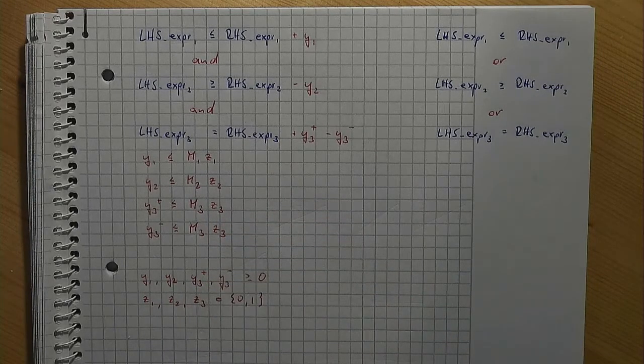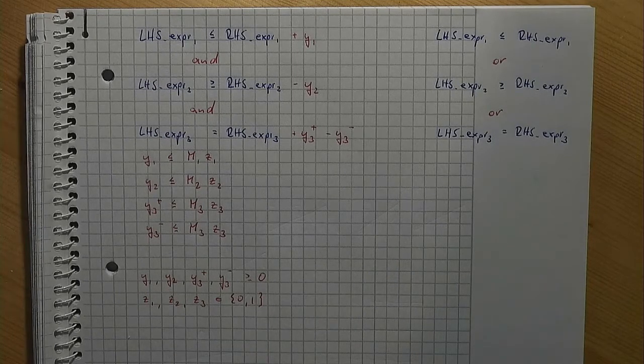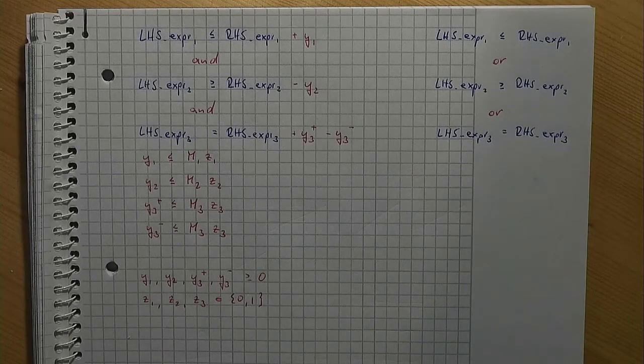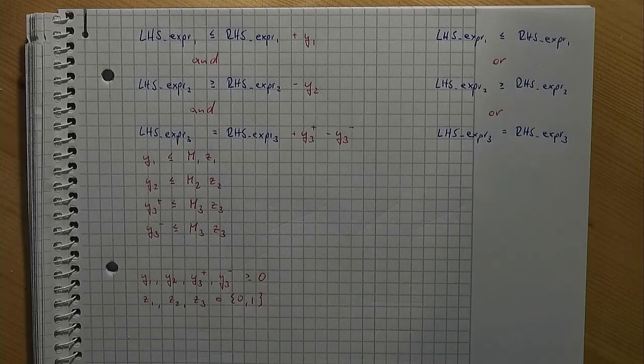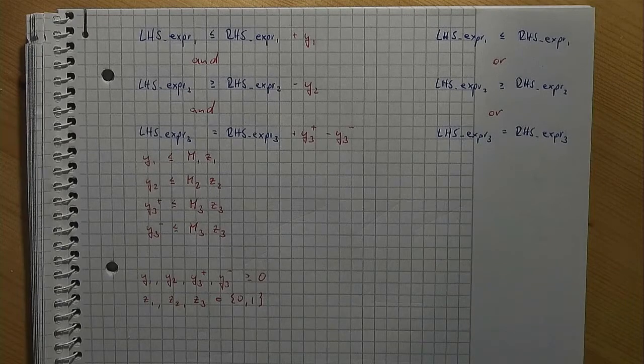We are not done yet. This formulation would allow for ignoring all the constraints by setting all z variables to 1. We must add one more constraint that makes sure that at most two of the constraints can be removed from the model. But that is easy now. Give yourself a try and pause the video now.